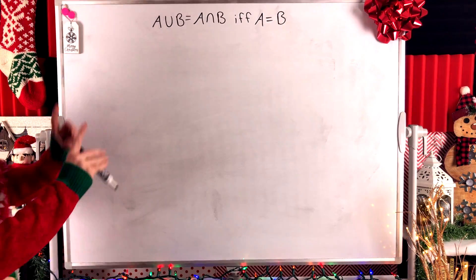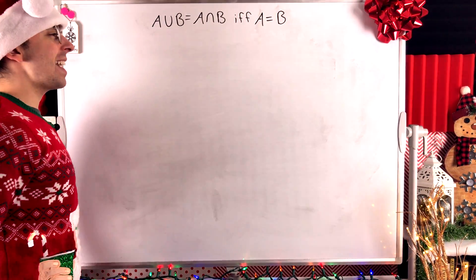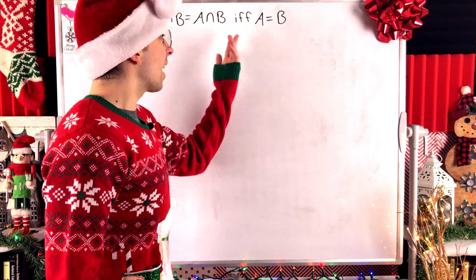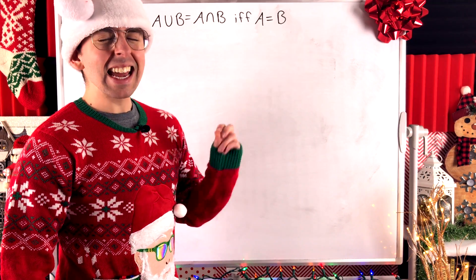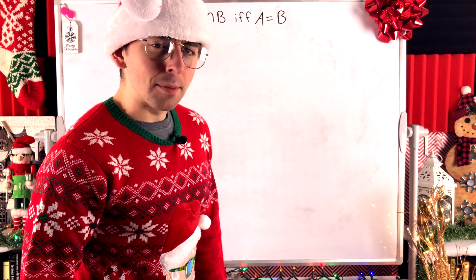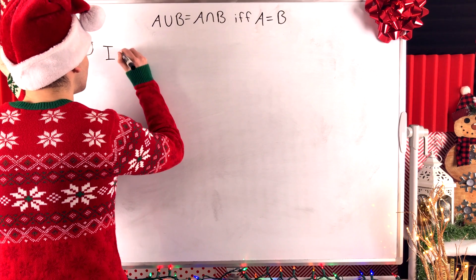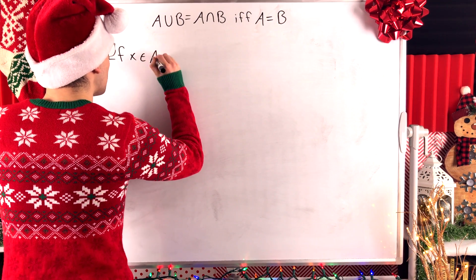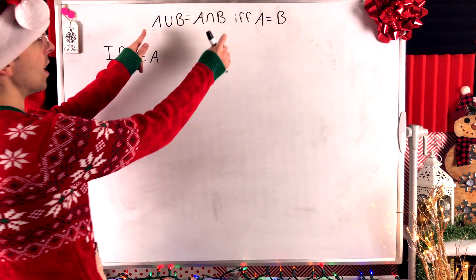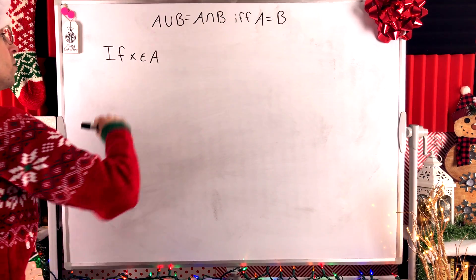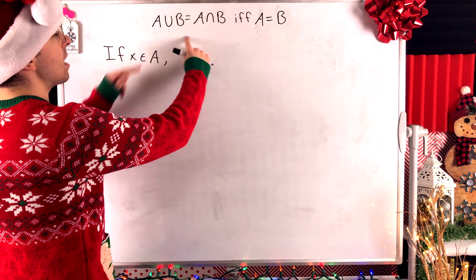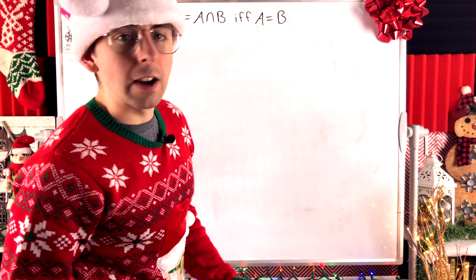For the other direction of the proof, we need to show that if A union B is equal to A intersect B, then A must equal B. Recall that to show two sets are equal — in this case A and B — we need to show that A is a subset of B and that B is a subset of A. Let's begin by showing that A must be a subset of B. To do that, all we have to do is consider any element of A. We can say: if X is an element of A, we need to show that it must also be an element of B. And of course we know this is what we're assuming — that A union B is equal to A intersect B. So if X is an element of A, we would like to get the union or intersection of A and B involved so that we can use this information.